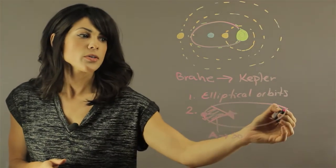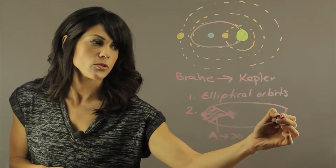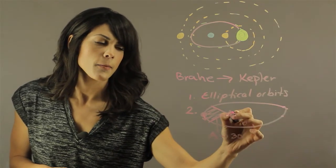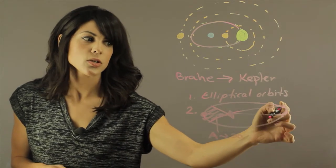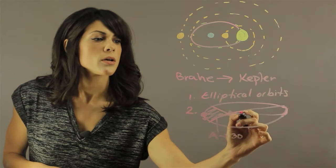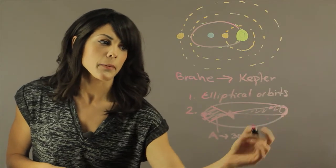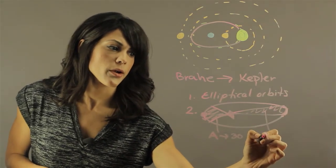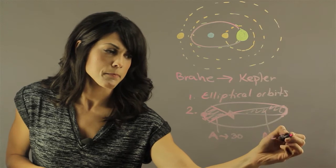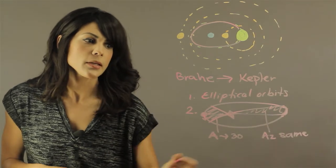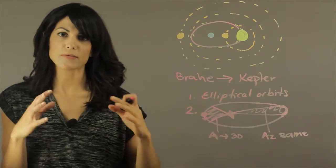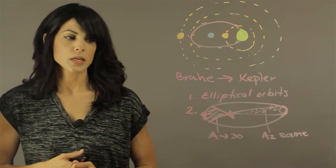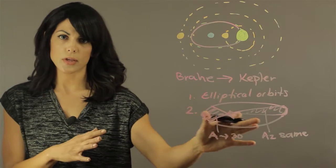Then you go to the other side of the orbit and wait also 30 days. Despite the fact that it looks like you cover a lot less ground and you're going a lot slower, this area is the same. Area 2 is the same, meaning these areas are the same if the time is the same. That's called the Equal Area Law.